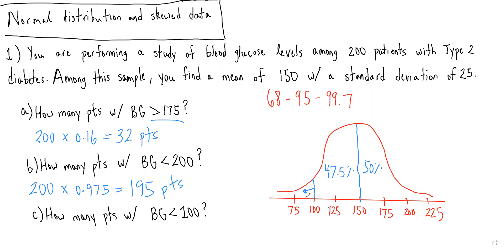And therefore, we know 2.5% of our data should fall to the left of the value 100. So we do 200 times 0.025, which is equal to five patients.